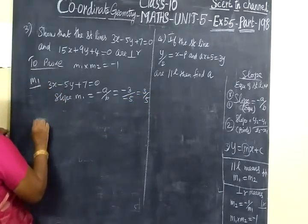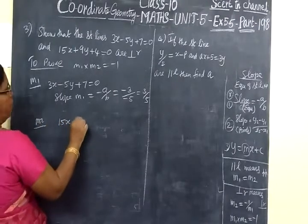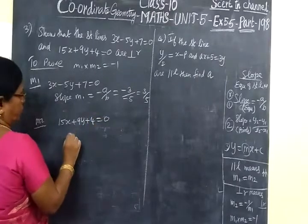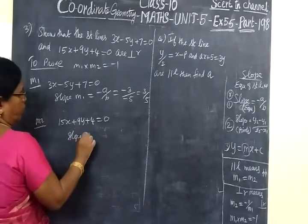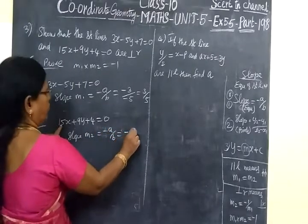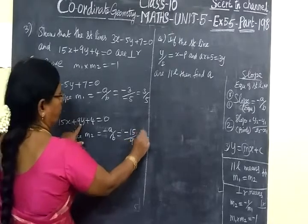Next, find M2. The second equation is 15x plus 9y plus 4 equal to 0. So slope M2 equal to minus A by B, minus A value is 15, B value is 9. So this is minus 15 by 9.